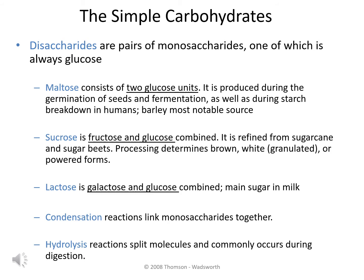The most notable food which contains maltose is barley. Sucrose is the second disaccharide, and this is the combination of glucose plus fructose. Sucrose generally comes from the processing of both sugarcane and sugar beets. Table sugar, or what we also refer to as white granulated sugar, is sucrose. Depending on the processing method, other forms of sucrose may be produced, and these can include powdered sugar or brown sugar.